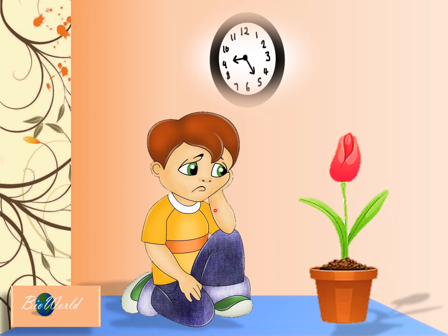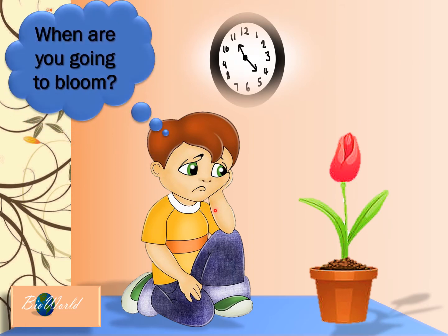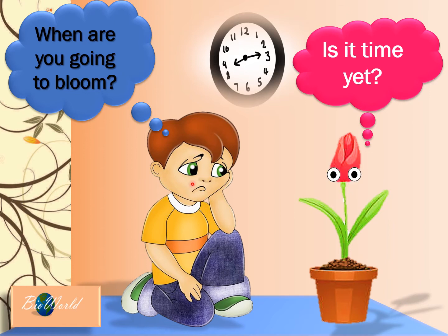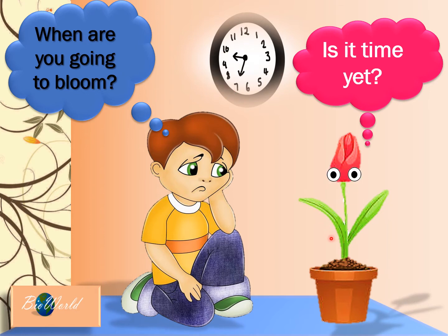The boy is so sad waiting patiently for the flower to bloom. But if the flower could talk, the flower would also be asking when is it time to bloom. Have you ever wondered how plants know when is the right time to flower, when is the right time to fruit? It's not as if they have a watch to keep time, so in this video I'm going to try to solve this question.